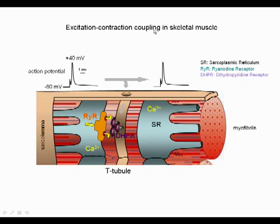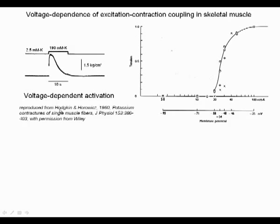Pioneer experiments performed by Hodgkin and Horowitz on frog muscle fibers established that EC coupling is a voltage-dependent process. Using potassium-rich solutions to depolarize the cell, they showed that the amplitude of the contraction was controlled by voltage, giving rise to the now classical S-shaped relationship linking contraction amplitude to depolarization.